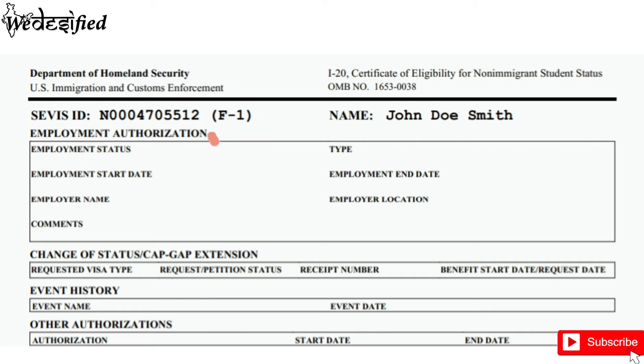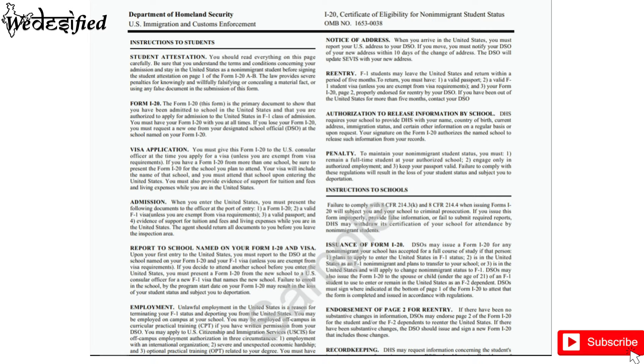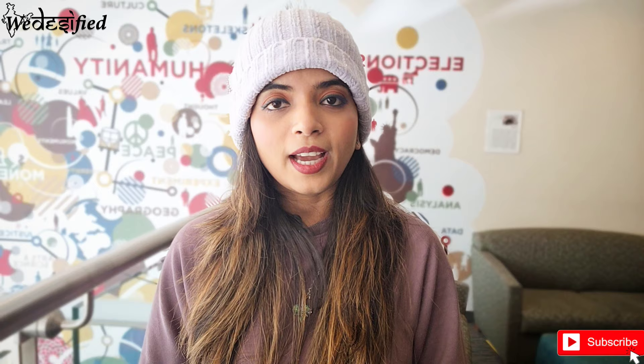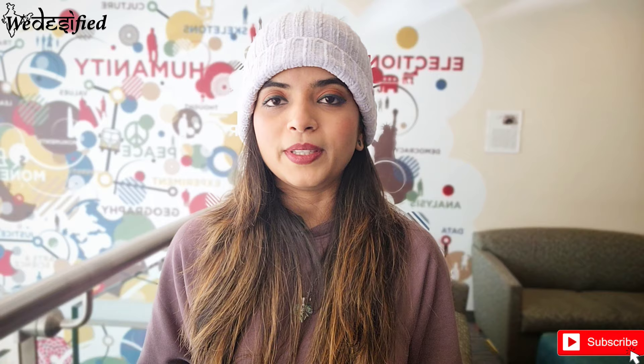The second page is for information about CPT and OPT employment authorization — at this point it will be blank. It also contains travel endorsements; with this signature, your I-20 is valid for traveling in and out of the U.S. for a year from the date of the signature. The third page is a bunch of instructions for students and schools. Along with the I-20, the admission packet would also contain useful information about the university — resources to help you with class registrations, immunization, accommodation, fee payments, and information about student organizations that will help your transition go smoothly.